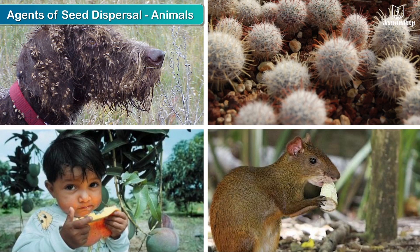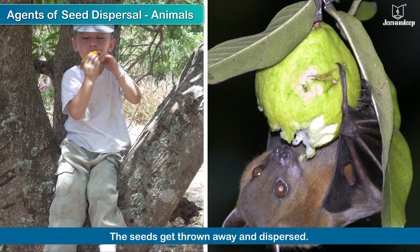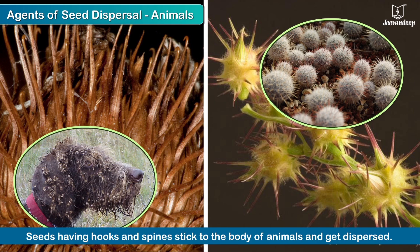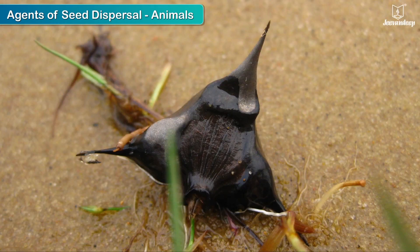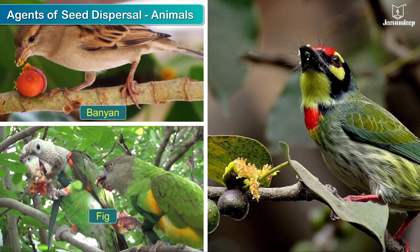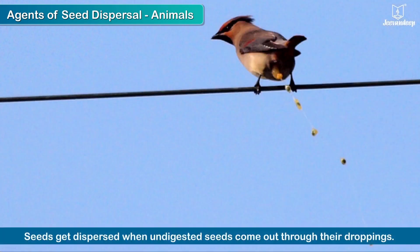Seed dispersal by animals. When fleshy fruits like mango are eaten by humans and animals, the seeds get thrown away and dispersed. Some seeds have hooks and spines which stick to the body of animals and are thus dispersed over long distances, e.g. caltrop and mimosa. Birds eat fruits of banyan, fig and peepal tree. Some seeds get stuck to the beaks, feathers or feet of birds and are carried over long distances. These also get dispersed when undigested seeds come out through their droppings.